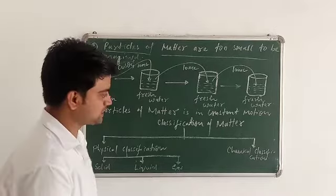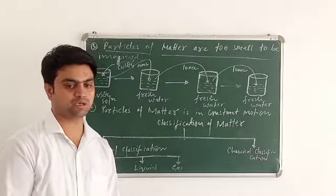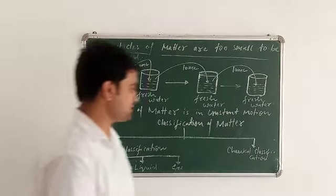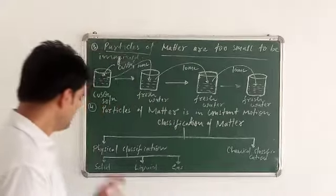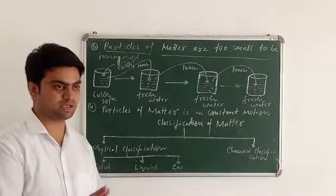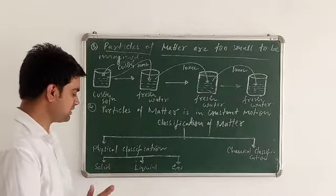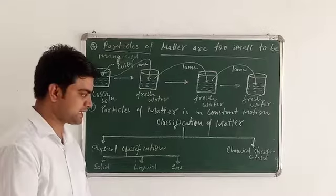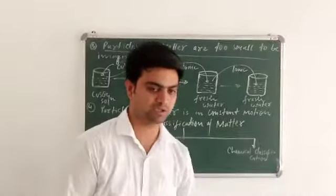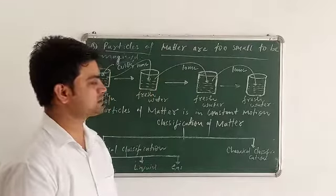Now I will talk about the classification of matter. There are two broad classifications of matter. The first one is physical classification and the second one is chemical classification. On the basis of physical classification, matter is classified into three parts: solid, liquid, and gas. The chemical classification will be considered in the next chapter of this class.